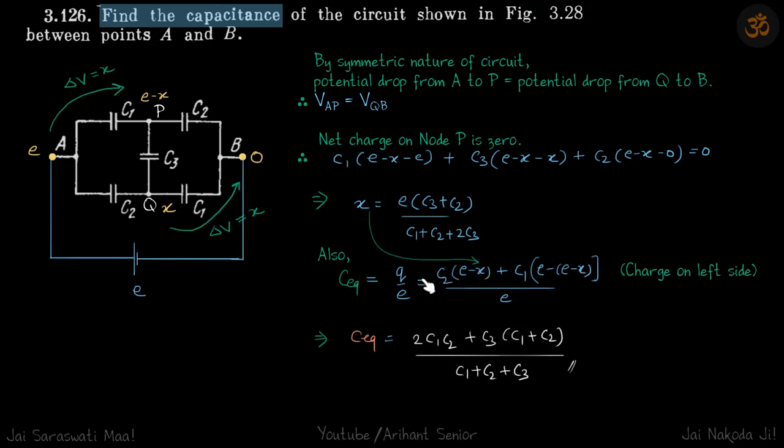What we have written is Q by E, these are the charges on the left side. Same thing we could do from here also, you will get the same answer. If you write the charges on the right side of these two capacitors, but then you have to divide by minus E. That is the only difference.